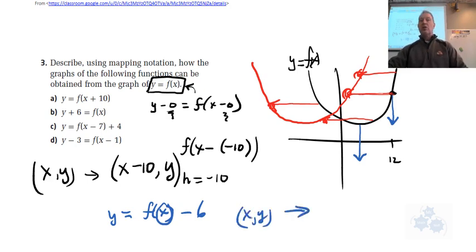So the mapping notation would look like this. Every point in the original function x, y would go like this. X stays the same. Y, you subtract 6 from all of the y values of the original points.